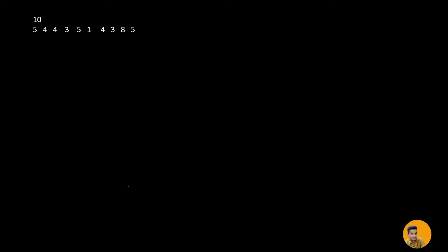Let's study closely how we are hand-picking the unique numbers. We see 5 — that's the first number. Moving forward, 4 is another unique number because we haven't encountered it. Then we encounter a repeated number so we move forward. Then we see 3, which is also unique. Moving forward we see another repeated number. There are a lot of scattered numbers in the list.